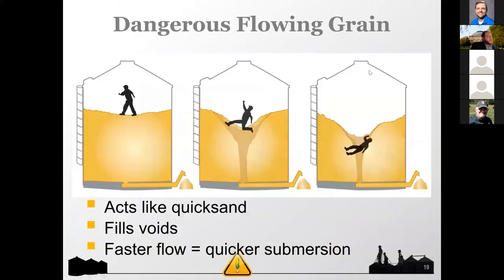Flowing grain acts basically like quicksand — you're walking in and it pulls you. When you're emptying a grain bin, it doesn't empty from bottom to top; the grain bin empties from top to bottom. That's why flowing grain tends to be a very hazardous condition.